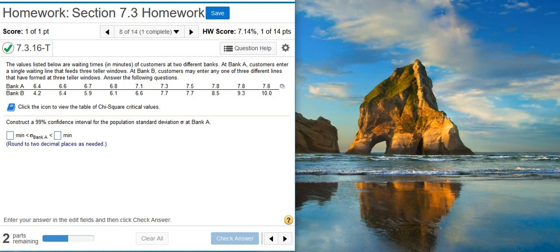Here's our problem statement. The values listed below are waiting times in minutes of customers at two different banks. At Bank A customers enter a single waiting line that feeds three teller windows. At Bank B customers may enter any one of three different lines that have formed at three teller windows. Answer the following questions. The first part says construct a 99% confidence interval for the population standard deviation sigma at Bank A. Notice we have our data listed here just below the problem statement.